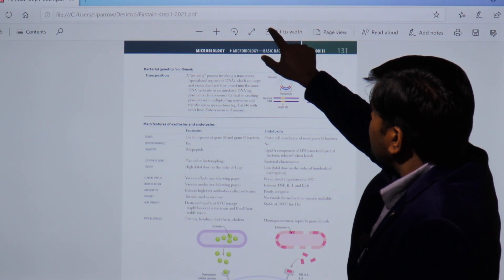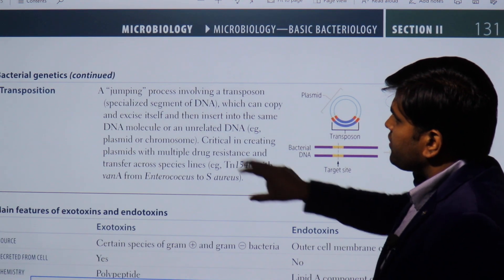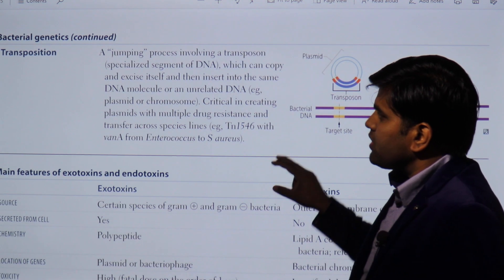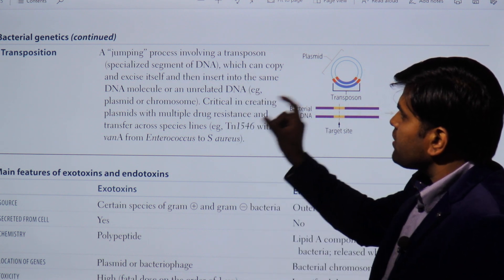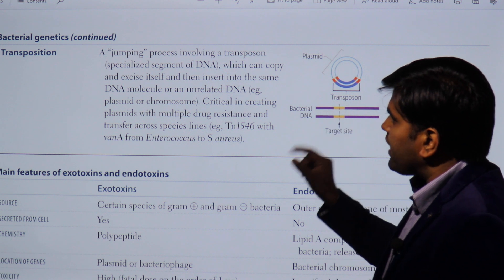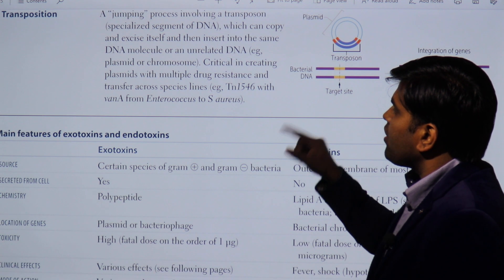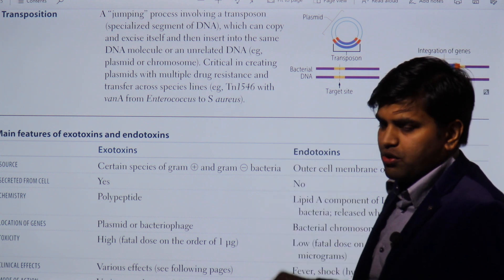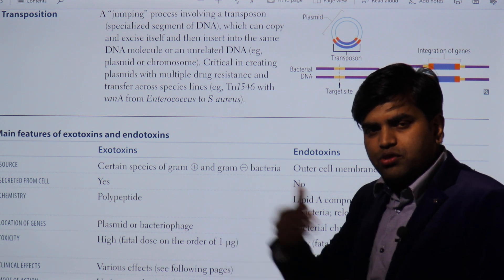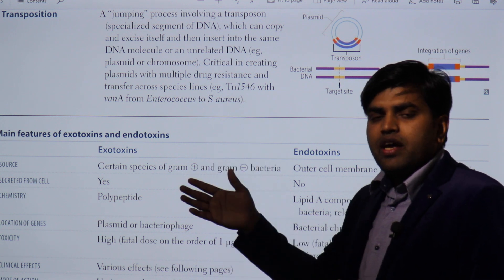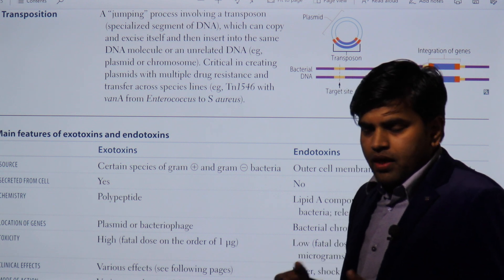We also talked about transposons — the jumping genes. These are a specialized segment of DNA which can copy itself, excise itself, and then insert into the same DNA molecule or an unrelated DNA molecule such as a plasmid or chromosome. It is called the jumping gene because it can jump from one place to another — from plasmid to plasmid, or from plasmid to chromosome, or even to another organism.